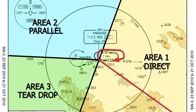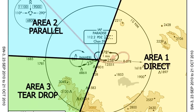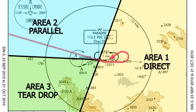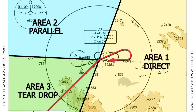So in this case we will have to do a procedure turn. If we are coming from area 1, we will do a direct entry. If we are coming from area 2, we will do a parallel entry. If we are coming from area 3, we will do a teardrop entry.